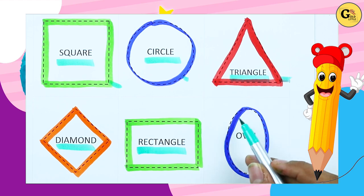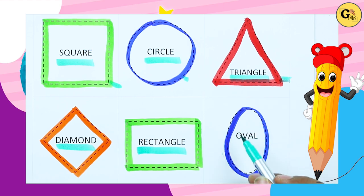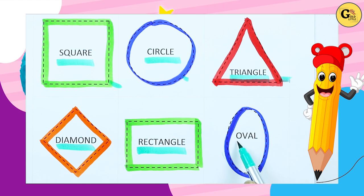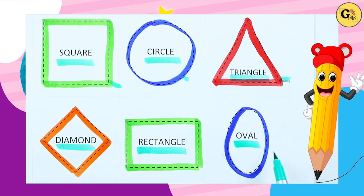Which shape is this? O-V-A-L. Right, O-V-A-L. It's oval, with blue color.